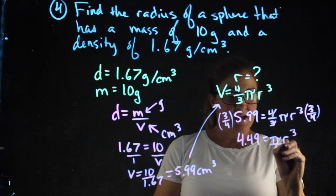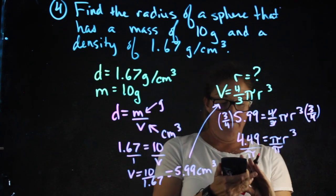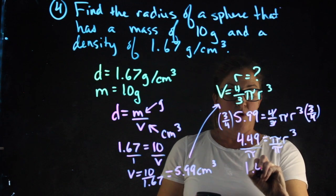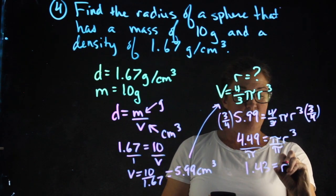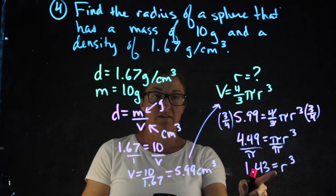So taking this 5.99 times 3 over 4 gives me now 4.49 equals pi r cubed. I'm going to divide each side by pi. So I'm going to divide it by 3.14. I now have 1.43 equals r cubed. I need to take the cube root of this number.